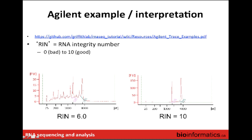As RNA gets degraded, the large ribosomal RNAs start to break down into smaller pieces, producing additional spiky peaks to the left of your two expected peaks on the electropherogram. The more degraded the sample, the harder it becomes to see the 18S and 28S peaks. Based on this pattern you can estimate an RNA quality score.